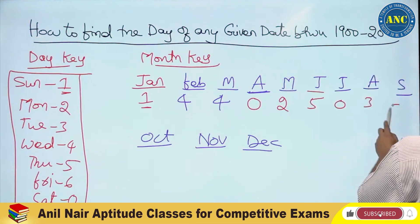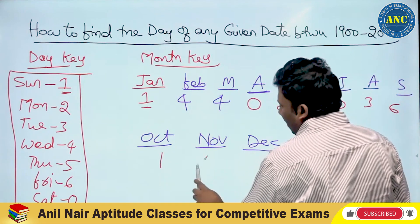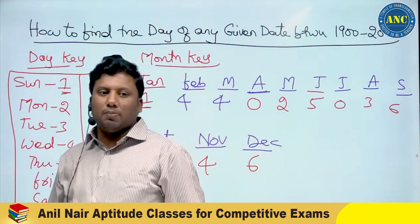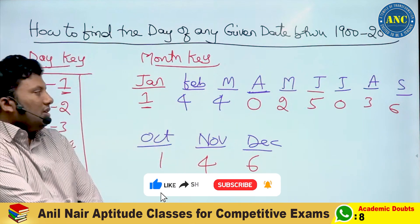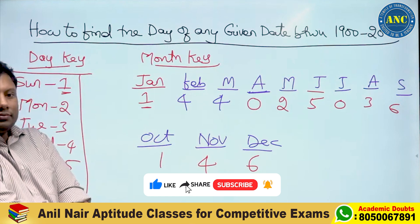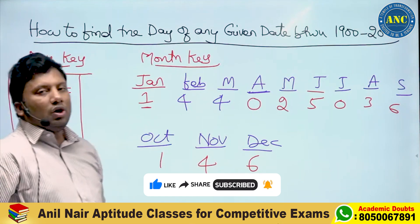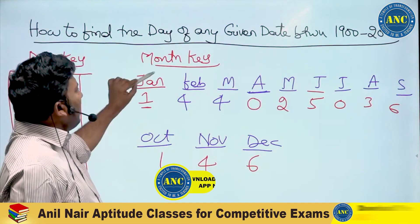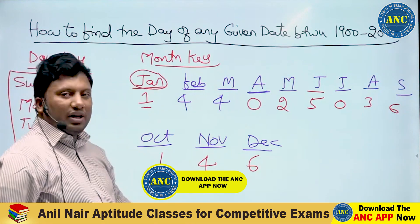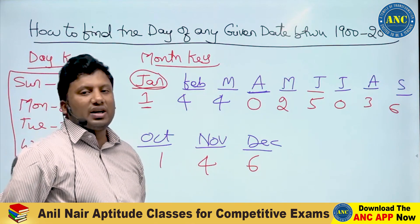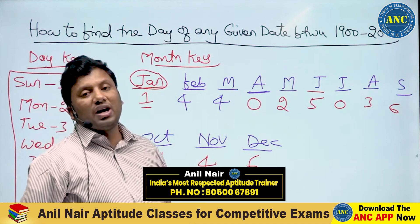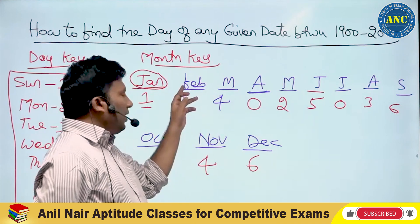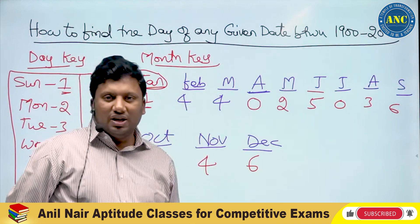Please don't mug it up. A lot of teachers will just write these values and ask students to memorize them: 1, 4, 4, 0, 2, 5, 0, 3, 6, 1, 4, 6. January contains 31 days — remainder 3 — 1 plus 3 is 4. February contains 28 days — remainder 0 — 4 plus 0 is 4.